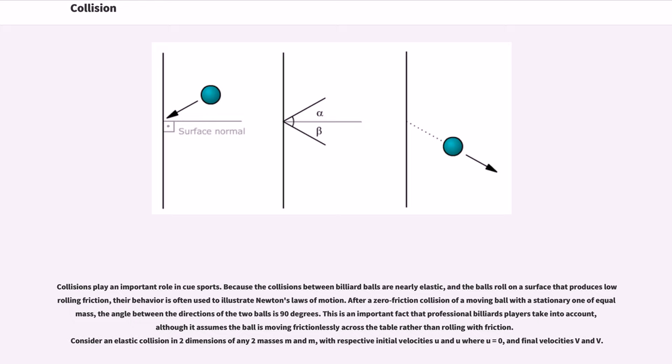Collisions play an important role in cue sports. Because the collisions between billiard balls are nearly elastic, and the balls roll on a surface that produces low rolling friction, their behavior is often used to illustrate Newton's laws of motion. After a zero-friction collision of a moving ball with a stationary one of equal mass, the angle between the directions of the two balls is 90 degrees. This is an important fact that professional billiards players take into account, although it assumes the ball is moving frictionlessly across the table rather than rolling with friction.